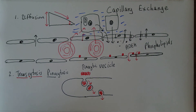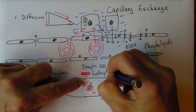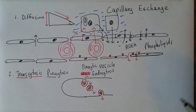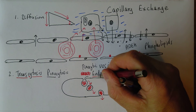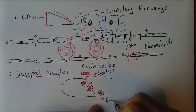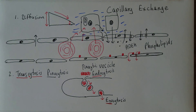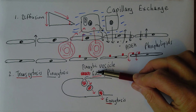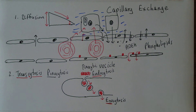The process where material is taken into the cell on one side is called endocytosis — endo means in. When it comes out on the other side it's called exocytosis — exo, as in exit. So the pinocytic vesicle is formed via endocytosis, moves across the cell, and exits on the other side by exocytosis.